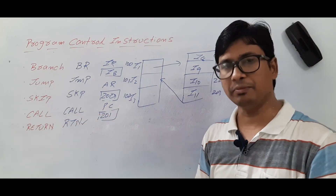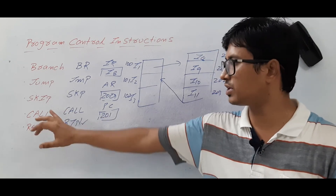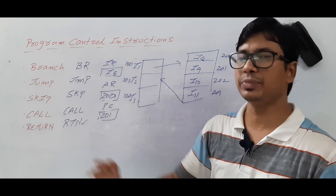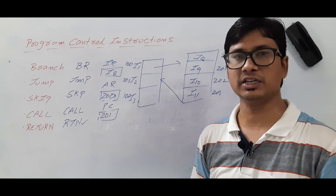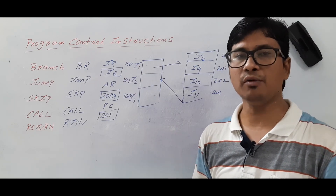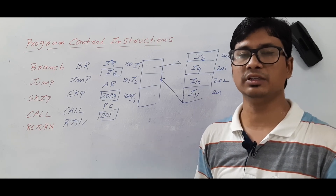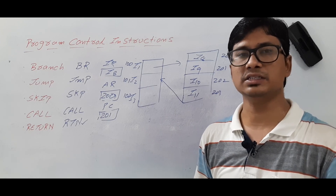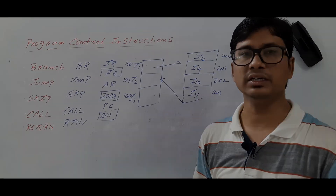I will discuss about the call and return in much more detail in the next video. I have discussed the basics of call and return, and explained in detail about branch, jump, and skip instructions. I hope you have understood all the instructions in program control instructions. If you have any doubts related to this video, feel free to ask me in the comment section — I will try to clear your doubts in less than 24 hours. Thank you for watching my videos. Have a nice day.